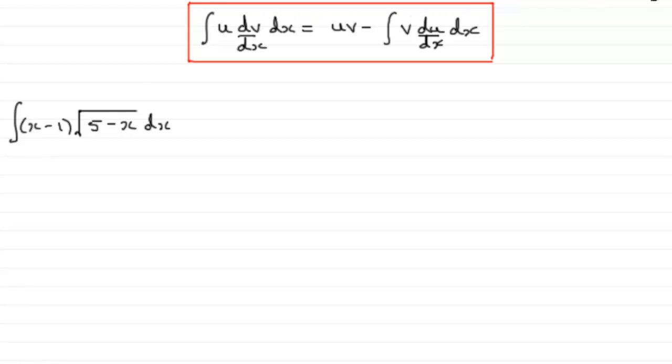And for something like this, the dv by dx, the part that we've got to integrate which gives us the v, has to be the root of 5 minus x because they asked us to integrate this in the first part of the question. So this will be my dv by dx and this part here will be the u.